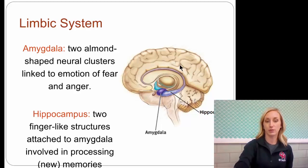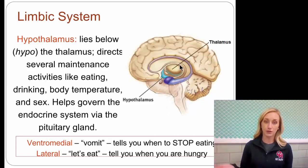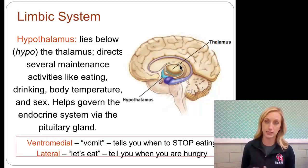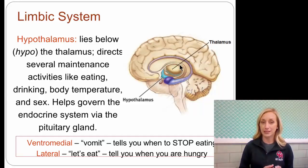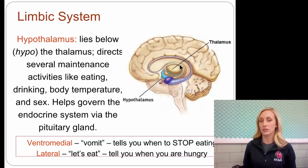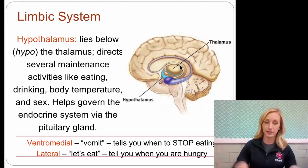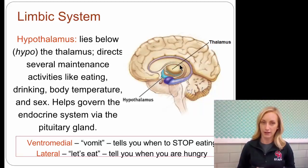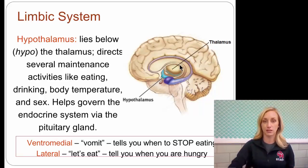The hypothalamus, under the thalamus, directs several maintenance activities: eating, drinking, body temperature, and sex. It helps govern the endocrine system. There are two parts, and it's very important for you to know the difference. The ventromedial — a way to remember this is 'vomit' — your ventromedial will tell you to stop eating when you've had enough. So it tells you when to stop eating. Your lateral hypothalamus says 'let's eat' — it tells you when you are hungry, when to start eating.